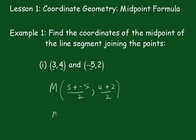And of course this simply becomes 3 plus minus 5 is minus 2, and minus 2 divided by 2 is going to be negative 1. And 4 plus 2 is 6 divided by 2 is 3 as your midpoint.